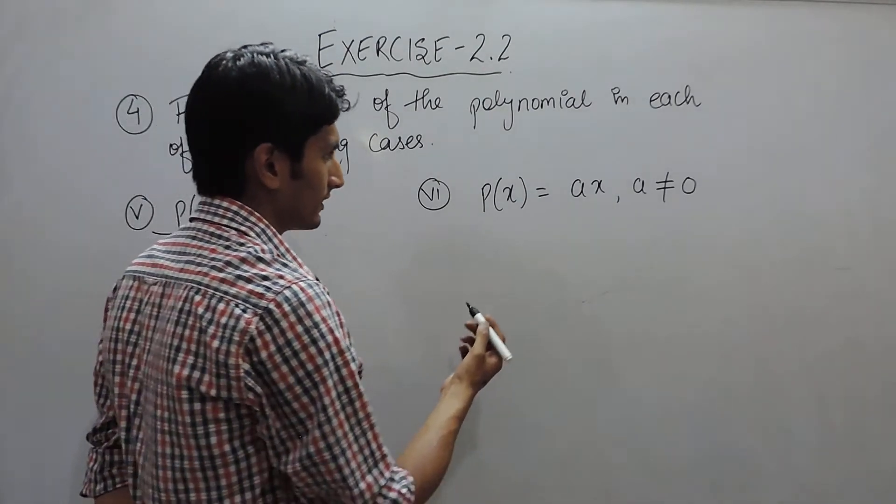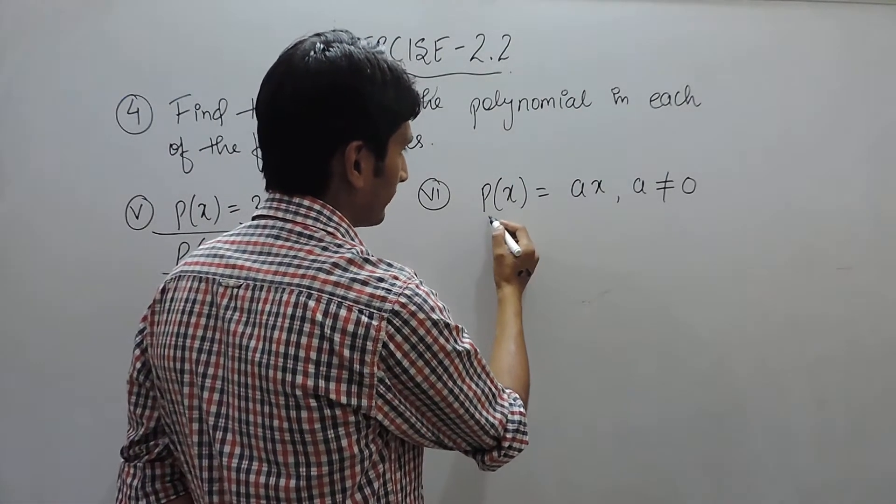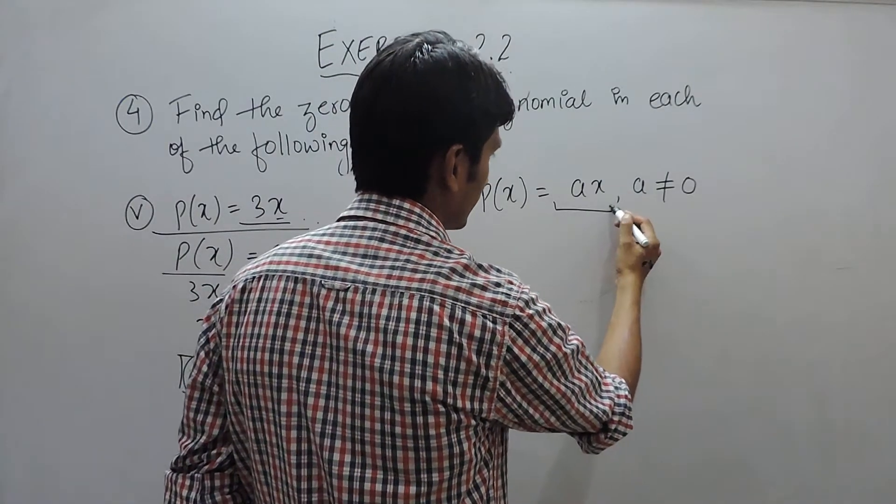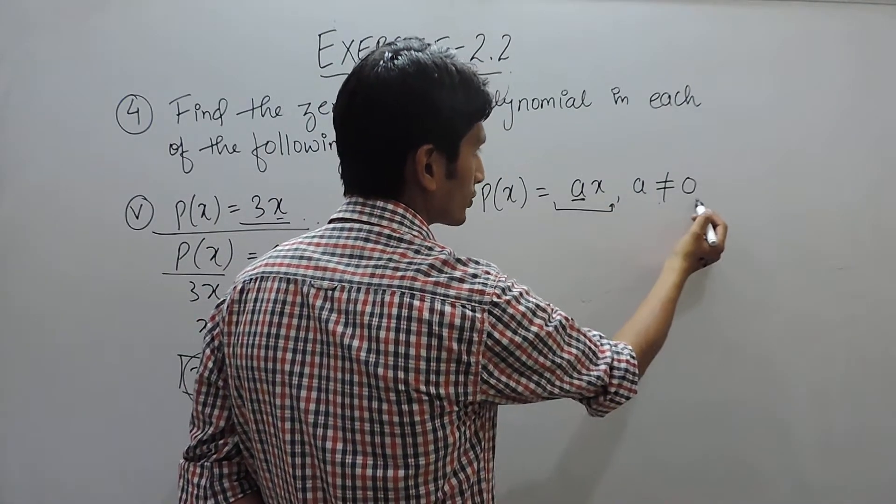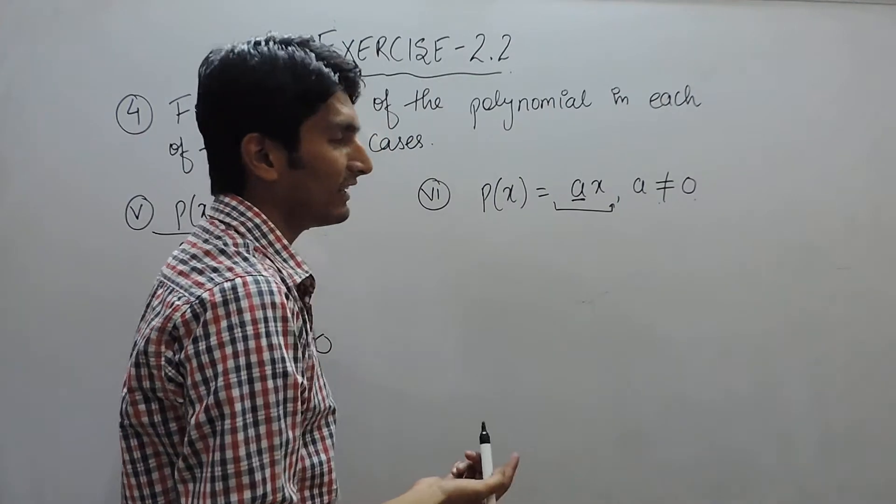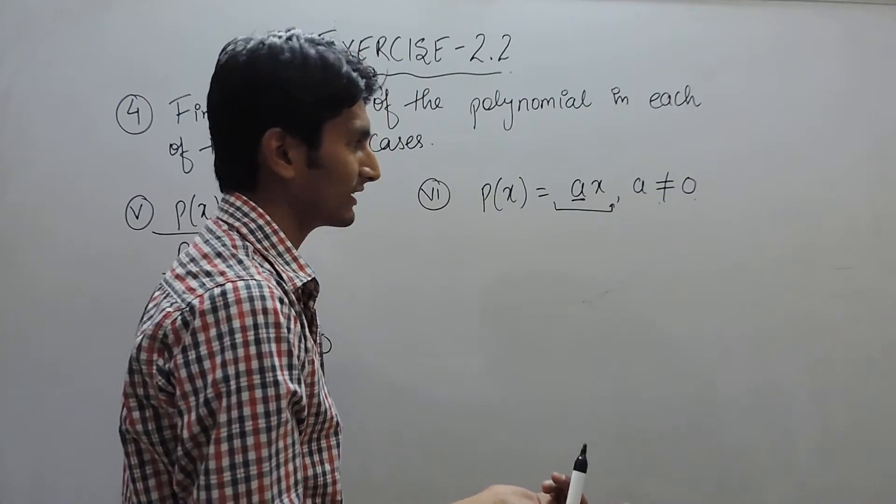In part 6, you are given a polynomial as ax where a is not equal to 0. This means a can be any value: 1, 2, 3, 4, 5, 6, 7, anything.